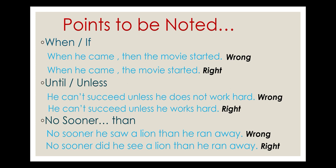The third common mistake involves the correlative conjunction 'no sooner...than.' The mistake is not using a helping verb after 'no sooner.' For example: 'No sooner he saw a lion then he ran away' is incorrect. It is compulsory to use a helping verb after 'no sooner.' The correct sentence is: 'No sooner did he see a lion than he ran away.'